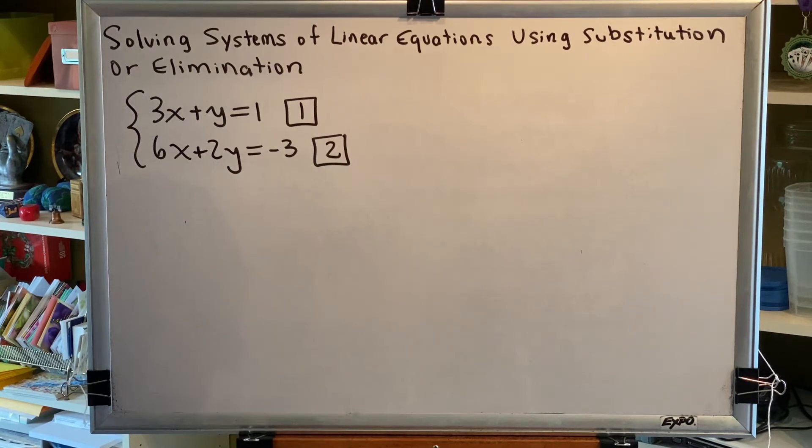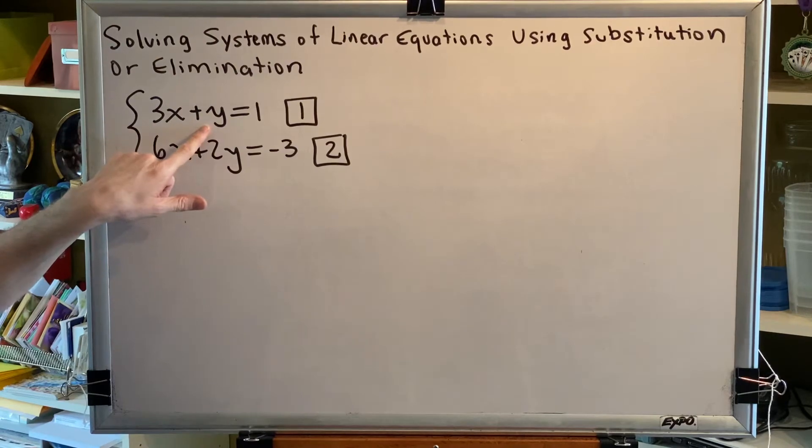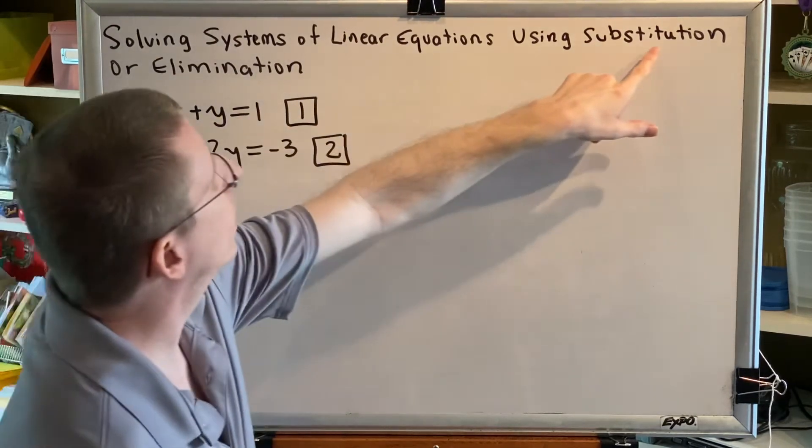Second, look at the coefficients of all of the x and y terms. Try to find one with a coefficient of 1 or negative 1, which we see here. So because of that we're going to use substitution.